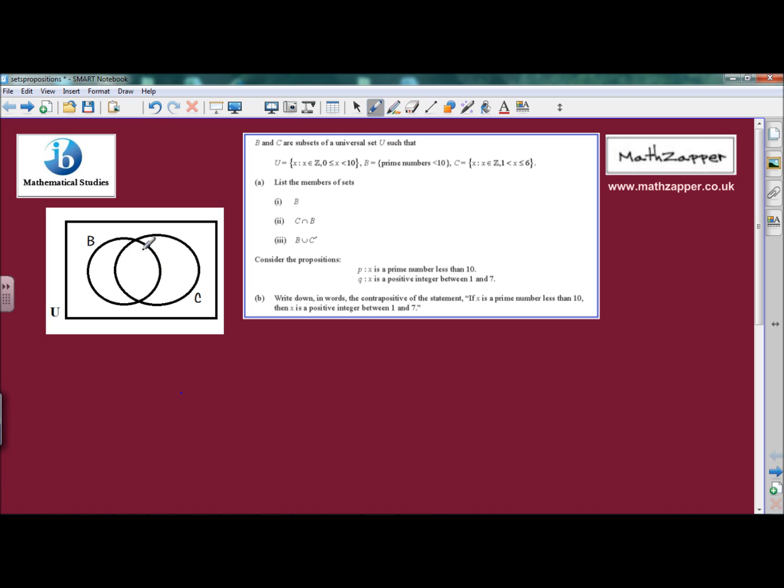Now in there we've got some prime numbers, so therefore those will be in set B as well, in the intersection of B and C. So first of all between 2 and 6, which numbers are prime? Well there's 2, 3 and 5, so we can write those in the intersection of B and C. And therefore the remaining numbers are 4 and 6. Remember we're not allowed to have 1.